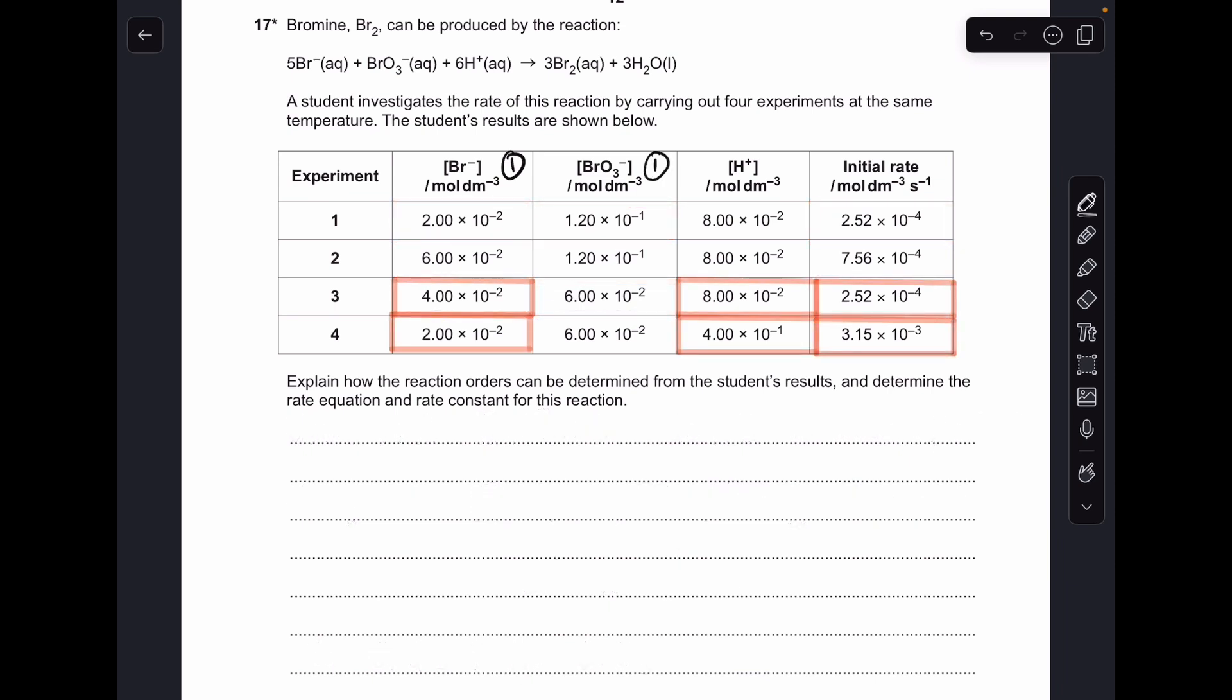So to get the order for the H+ ion, I'm using experiments three and four, and that's because the BrO3- concentration isn't changing. And there's the summary of the information: using experiments three and four, the bromide ion concentration is halved, the H+ concentration has gone up five times, and the overall rate is twelve and a half times higher.